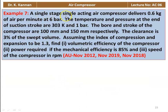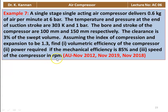Example number 7: a single-stage single-acting air compressor delivers 0.6 kg of air per minute at 6 bar. The temperature and pressure at the end of the suction stroke is 303 kelvin and 1 bar. The bore and stroke are 100 mm and 150 mm respectively. The clearance is 3% of the stroke volume. Assuming index of compression and expansion as 1.3, find the volumetric efficiency, power required given mechanical efficiency is 85%, and the speed in rpm. This appeared in November 2012, November 2019, and November 2018.